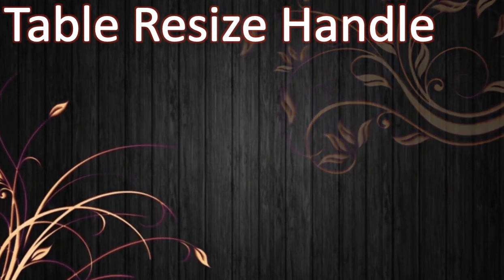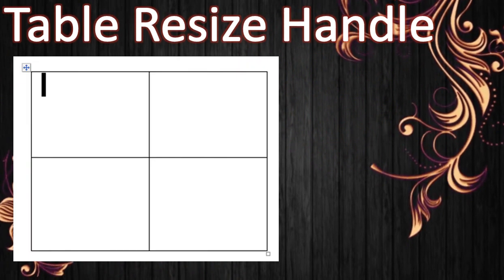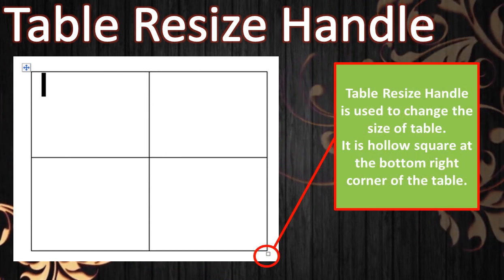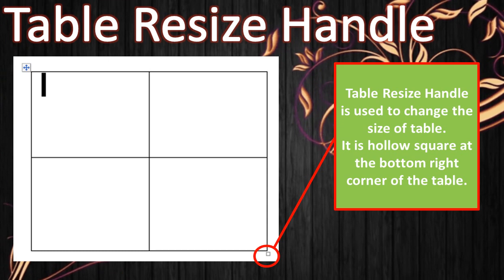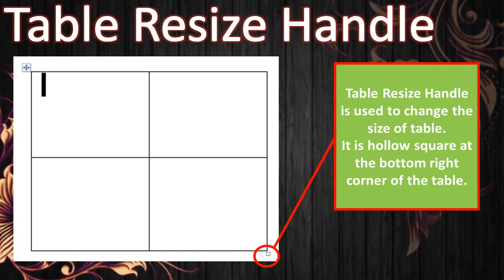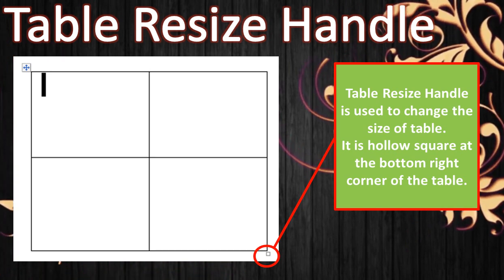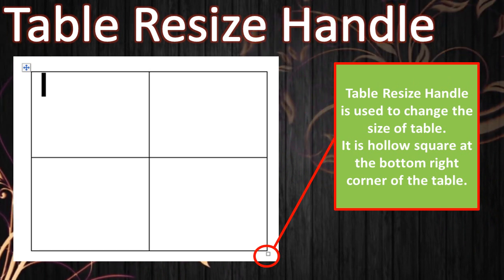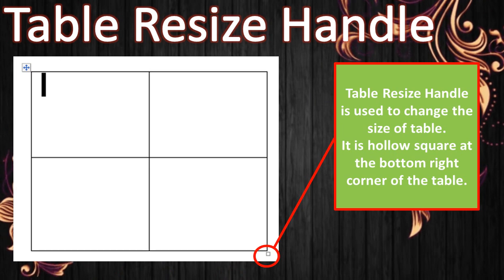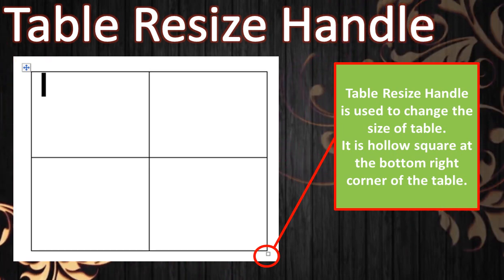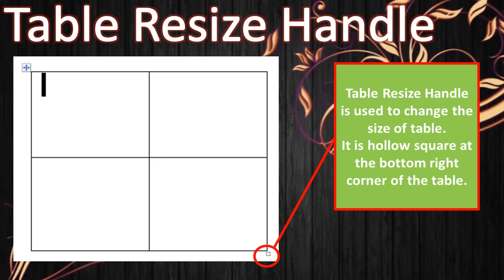The table resize handle is a hollow square at the bottom right corner of the table when you click inside it. It is used to resize the table — meaning changing the size of the table. If you want to make the table smaller or bigger, you use the table resize handle. I hope these common terms are clear. Thank you and have a nice day.